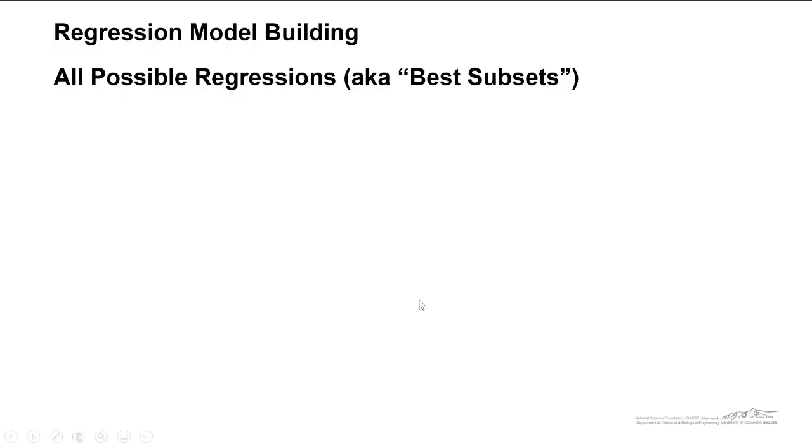Now let's talk about the all possible regressions technique, also known as best subsets. This essentially takes all the possible combinations. So we could have a one-term model, a two-term model, a three-term, and if we have six terms like we do in our example, we could have a six-term model. But you can have different combinations. For example, a three-term model, you could have x1, x3, and x6. Or you could have x2, x4, and x5. For a four-term model, you could have x1, x3, x4, x5. So there's lots of different possibilities.